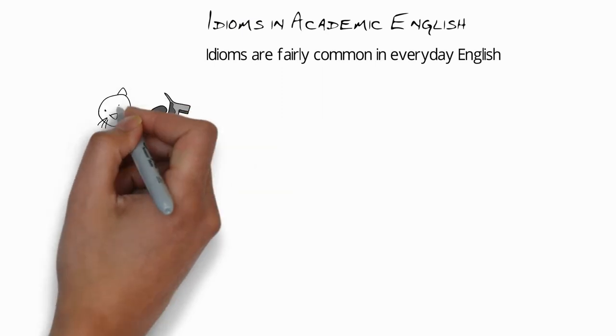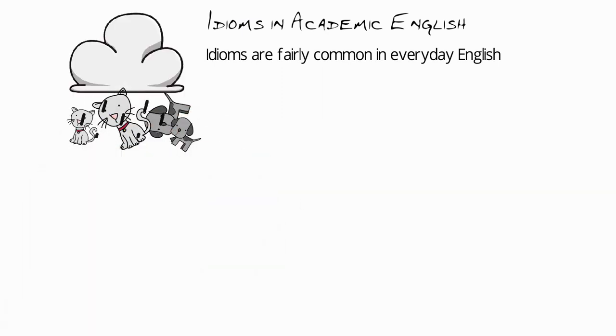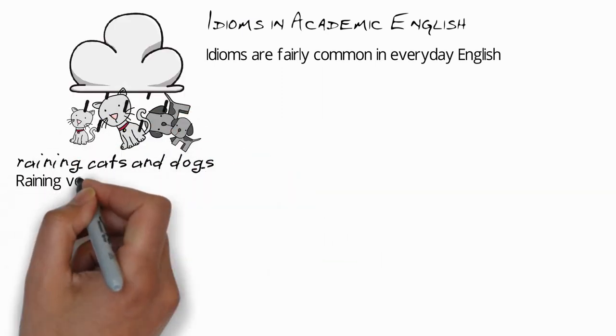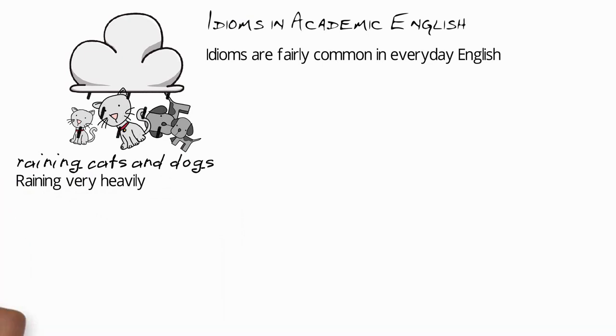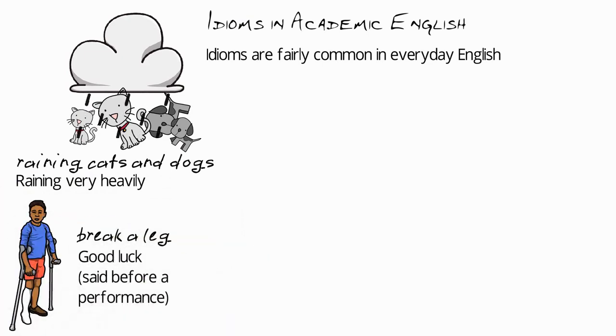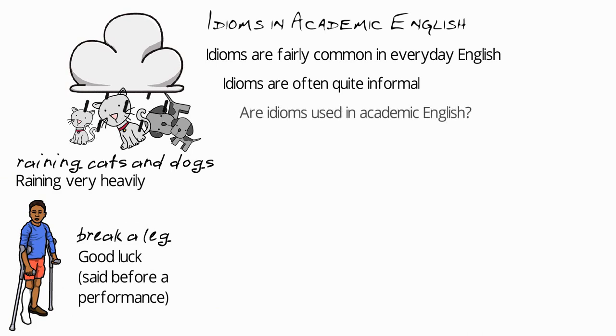Idioms are fairly common in everyday English. For example, you might know the phrase raining cats and dogs, which means raining very heavily, or the idiom break a leg, which means good luck said before a performance. Now most idioms are quite informal, which begs the question, are idioms used in academic English?